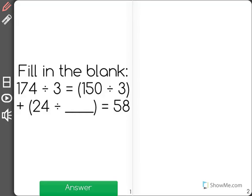The math problem says fill in the blank: 174 divided by 3 equals 150 divided by 3 plus 24 divided by blank equals 58. The problem that we're trying to answer is 174 divided by 3 and finding what the missing number is.